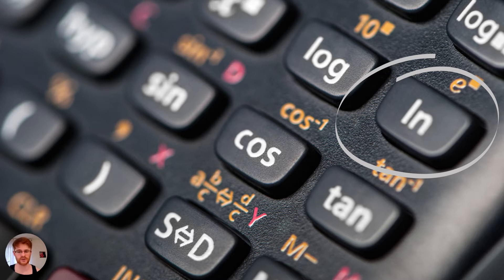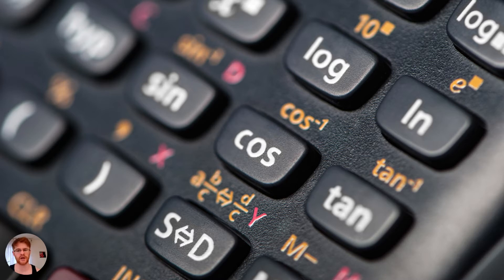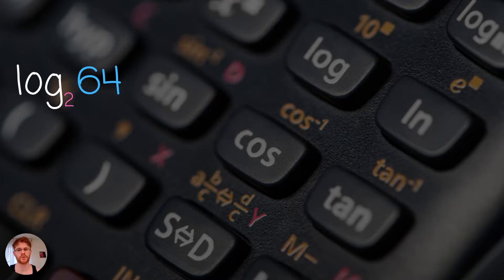What I will show you is how we can use these particular log buttons to calculate the log with any arbitrary base using a change of base relation. Let's suppose we wanted to calculate log base 2 of 64 using our calculator. As we can see on the calculator, we don't have a log base 2 button; however, we have log base 10 and log base e.